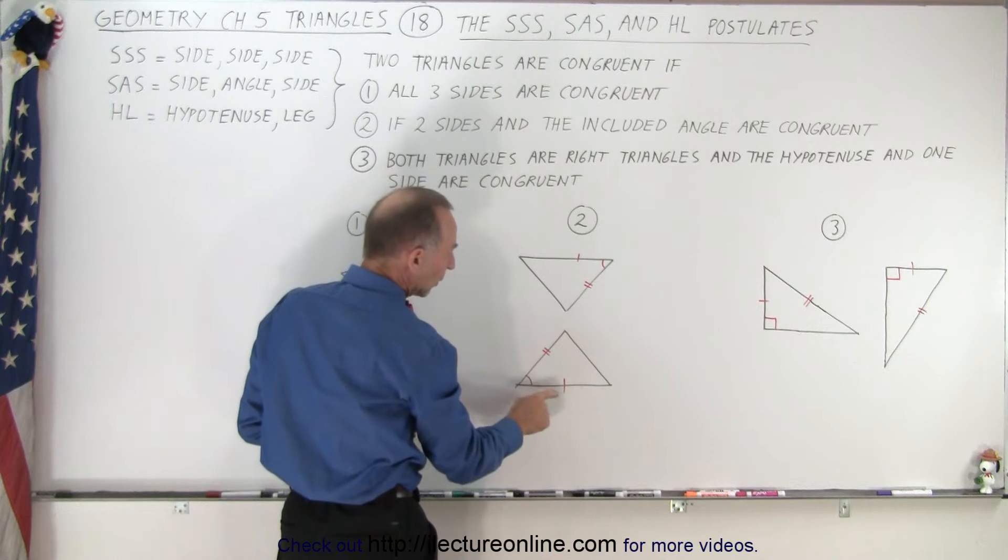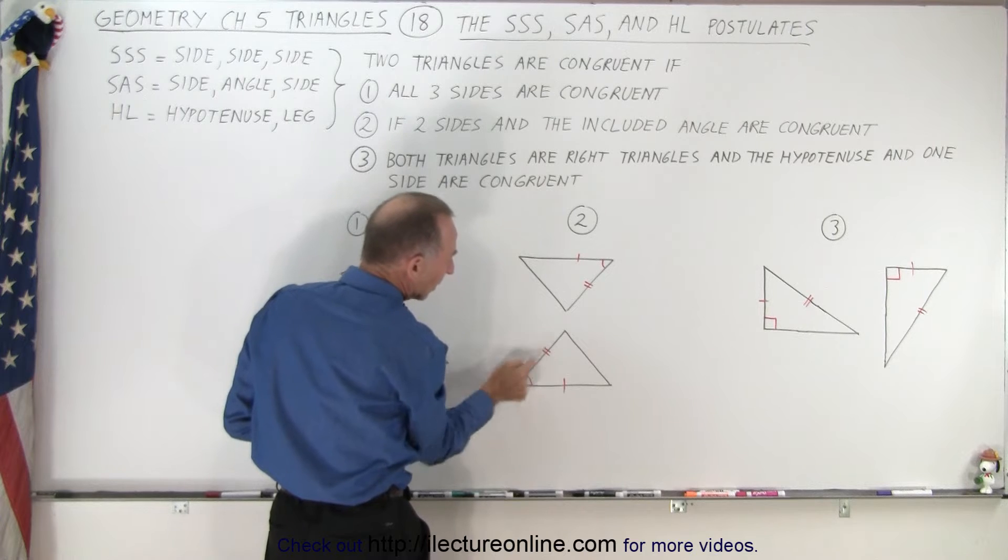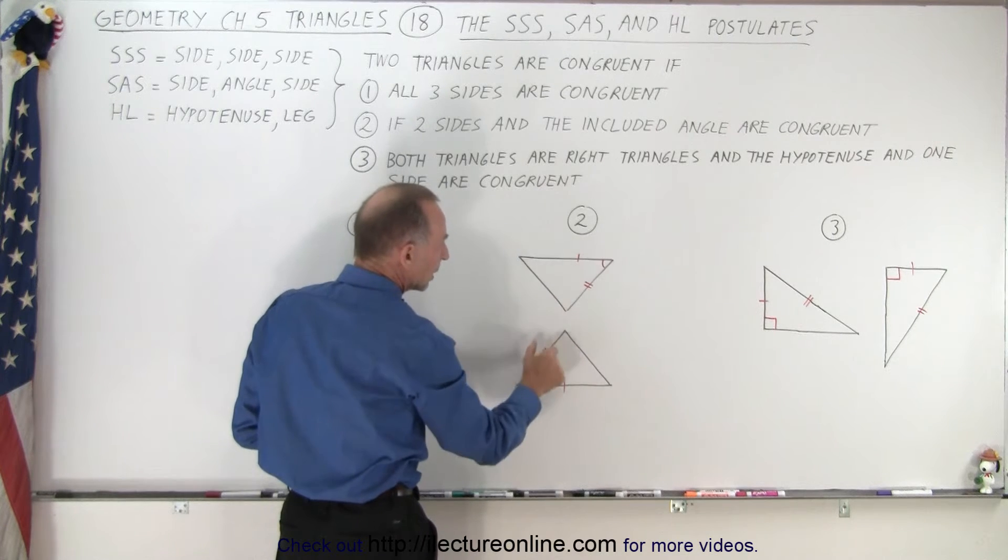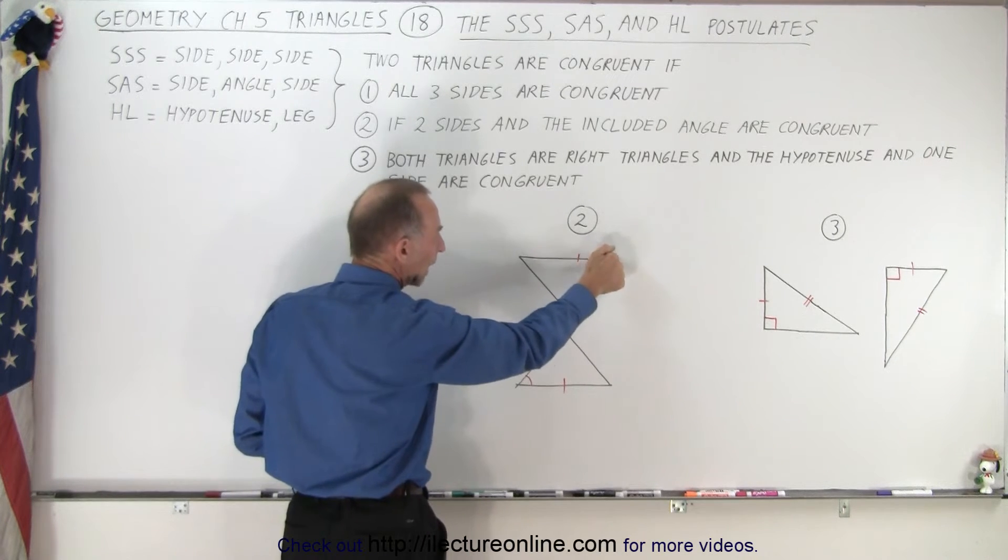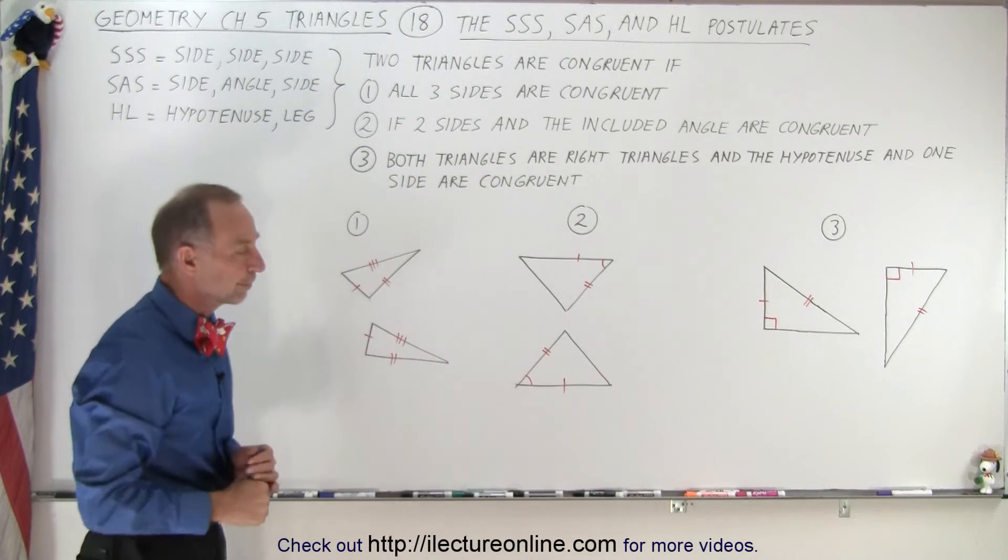Side, angle, side. So if we have two sides and their included angle are congruent to the two sides and the congruent angle of another triangle, then the two triangles must be congruent.